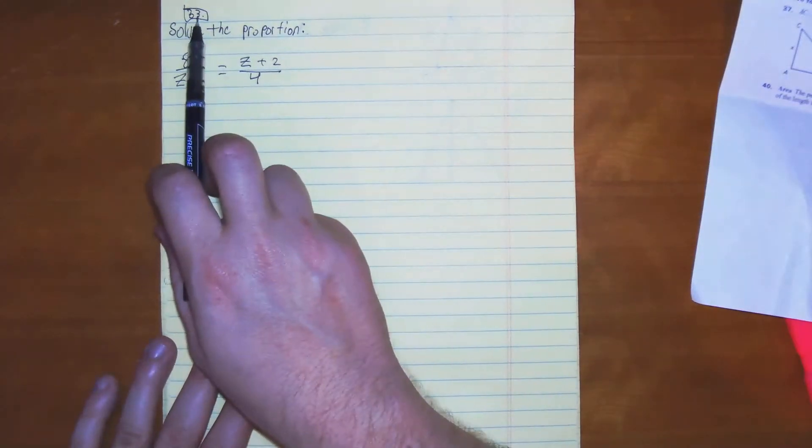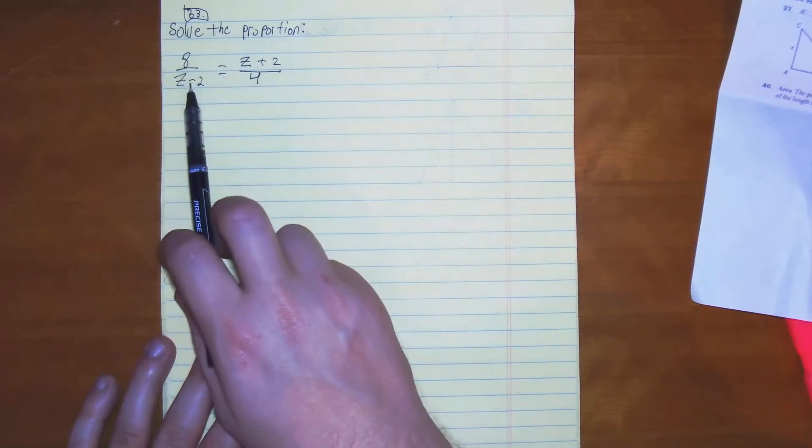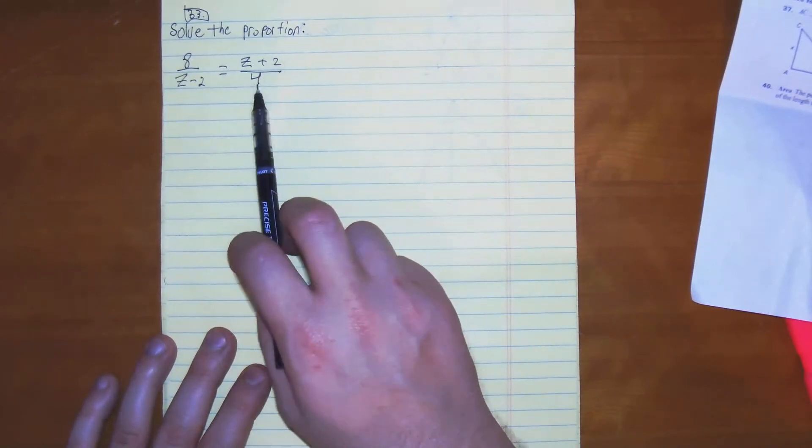This is number 33. Solve the proportion: 8 over z minus 2 is equal to z plus 2 over 4.